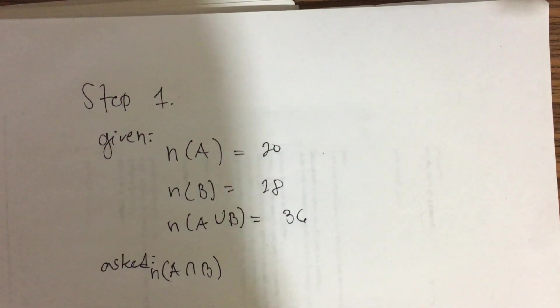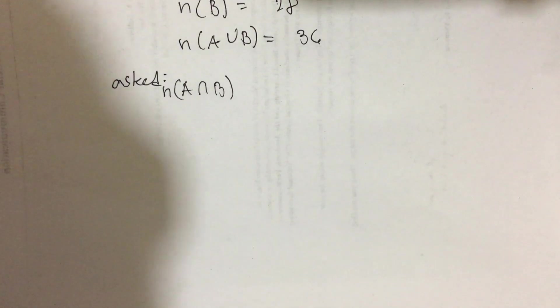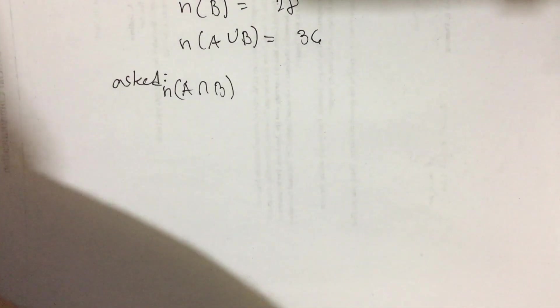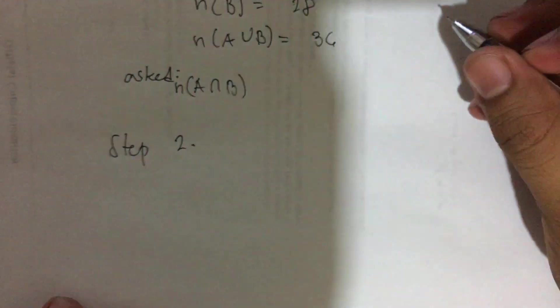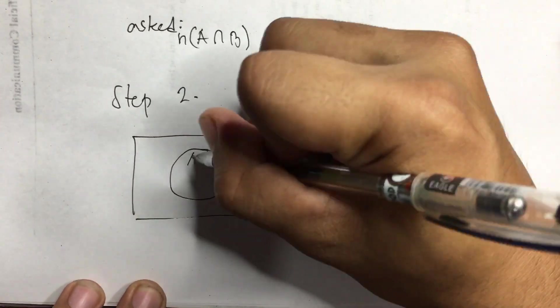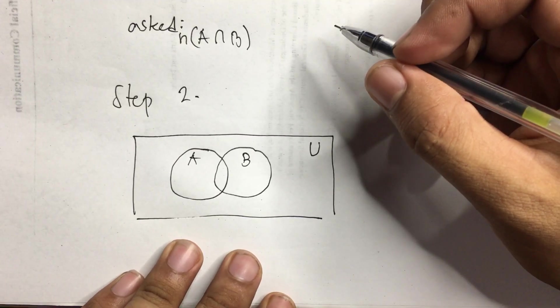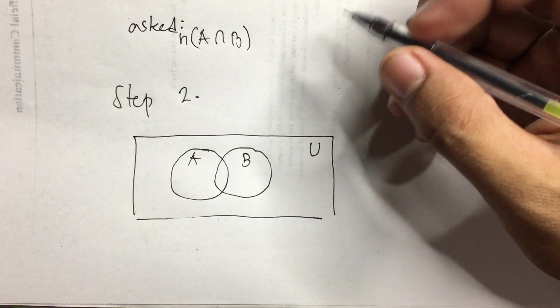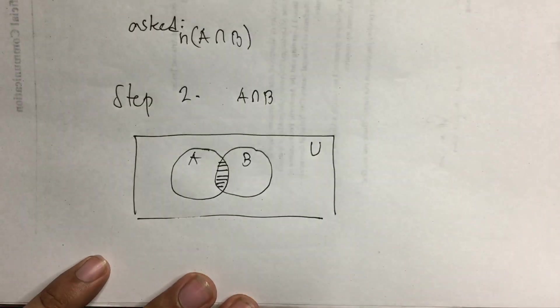Step two: illustrate using a Venn diagram. We draw two overlapping circles — this is set A, this is set B, and the rectangle around them is the universal set. A intersection B refers to the common parts shared between the two sets, which is the overlapping region in the middle of the Venn diagram.